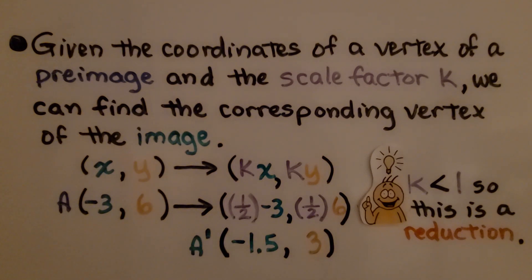Remember, when we multiply a negative to a positive, we get a negative. Our scale factor k is less than 1, so this is a reduction.